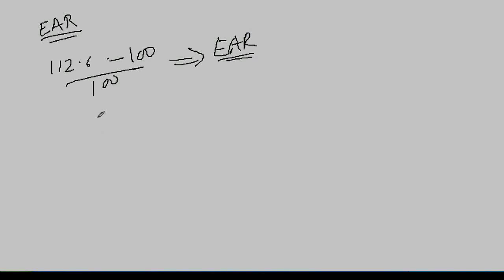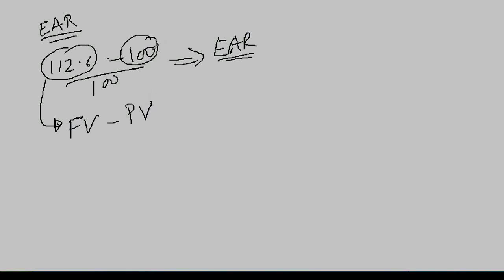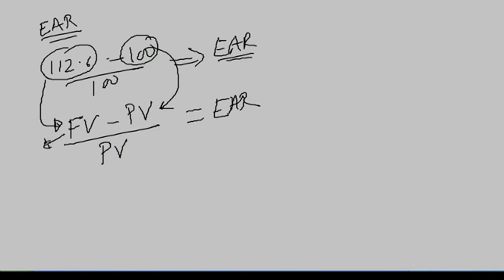Now if you apply the same concept over here — if you see what is this amount, can I say that this is your future value? And this is your present value. So for effective annual rate, if you are doing future value, please note that you have to find it out for one year. In one year, how much do you get? Future value minus present value, divided by present value.